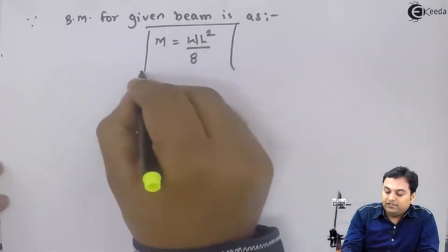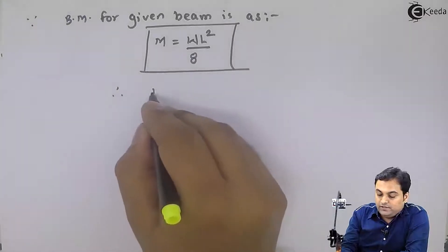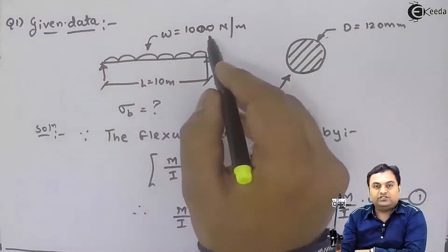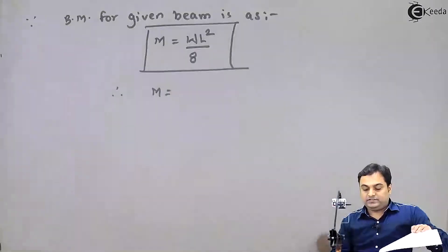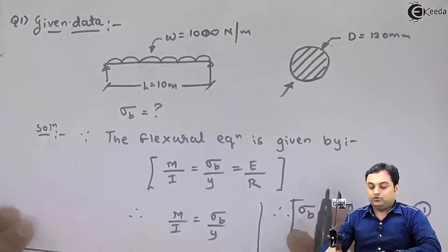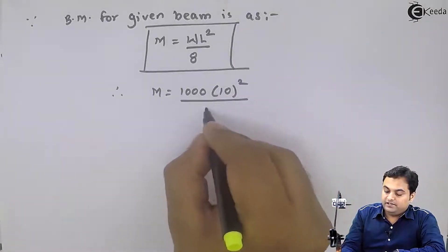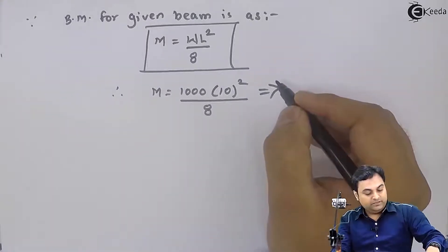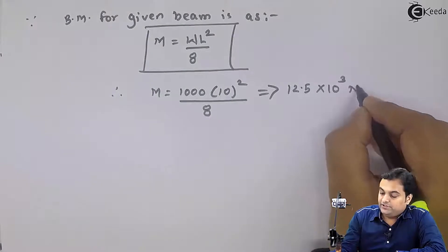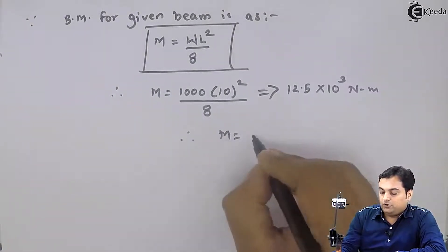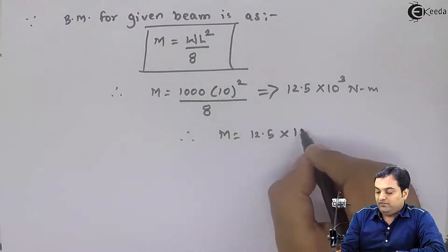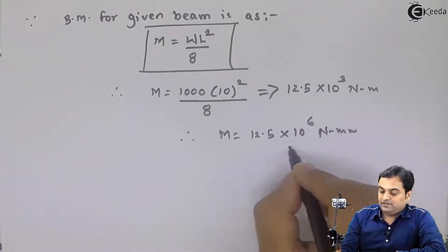Therefore, M = WL²/8, where W is the intensity of UDL = 1000 Newton per meter, and L = 10 meters. So M = 1000 × (10)² / 8 = 12.5 × 10³ Newton meter. Converting to Newton mm: M = 12.5 × 10⁶ Newton mm. This is our bending moment value.